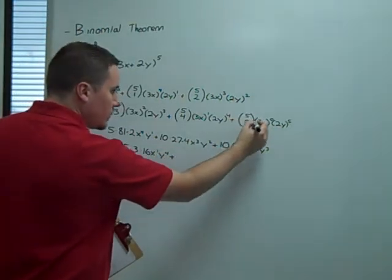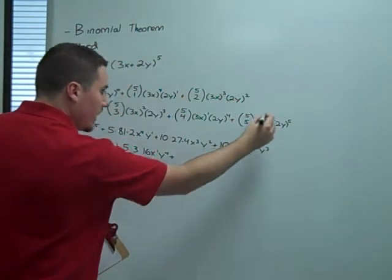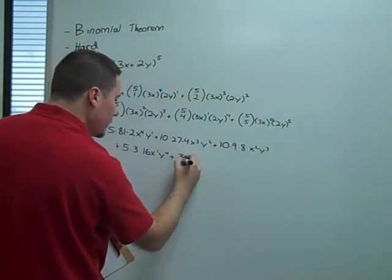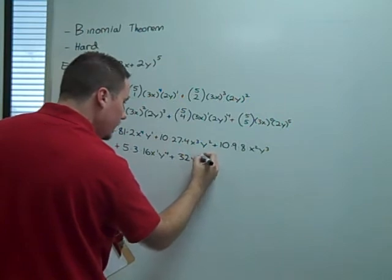And then our final term. Again, this is 1. This is 1. So all we have is a 2 to the fifth, which is 32y to the fifth. Now, cleaning this all up with the calculator,